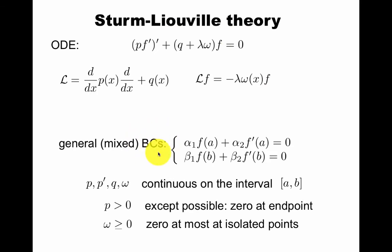In general, I can allow mixed boundary conditions. These are the conditions you need to be reasonably confident that you will have a nice solution in the sense of physics. These should be continuous on this interval. This should be greater than zero, except possibly zero at the endpoint, and this would be zero at most at isolated points. Now, what does this mixed mean? I said, if you set the value to zero, for example, that's a Dirichlet condition, and then you wouldn't have these. If you set the derivative to zero, for example, that's the Neumann condition.